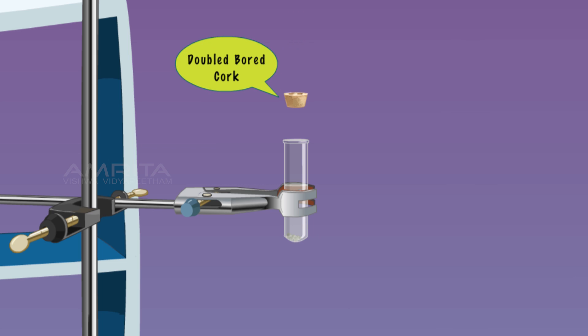Cork the boiling tube with a double-bored cork. Insert a thermometer through one bore of the cork. Keep the bulb of the thermometer about 3-5 cm from the surface of the water.